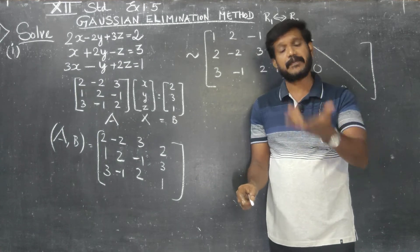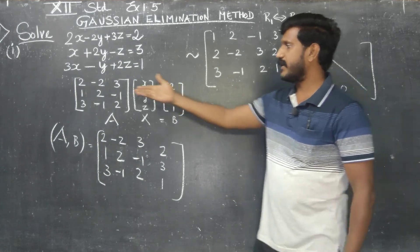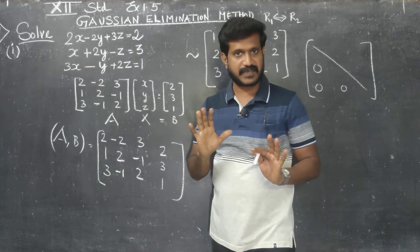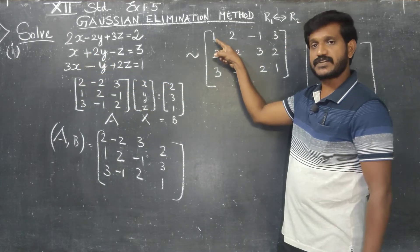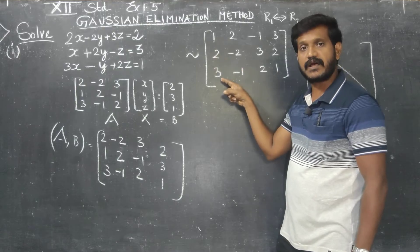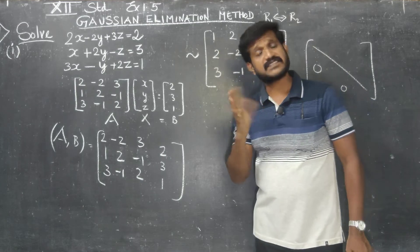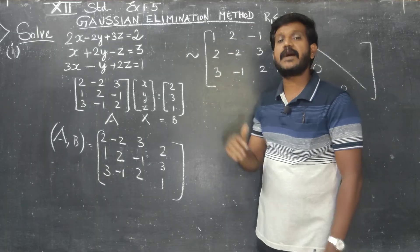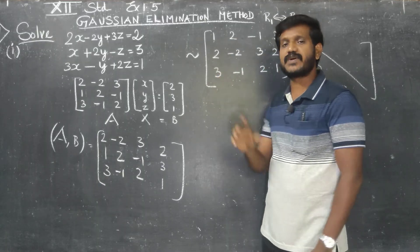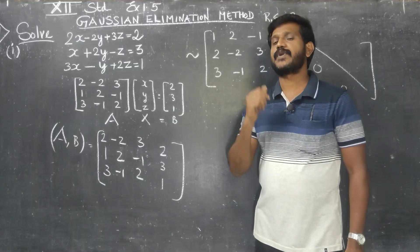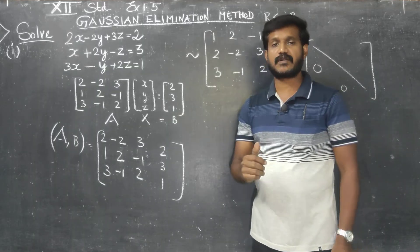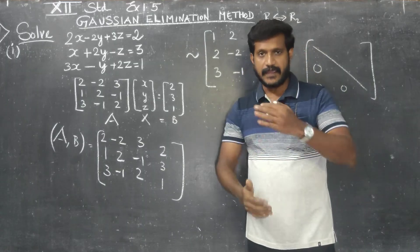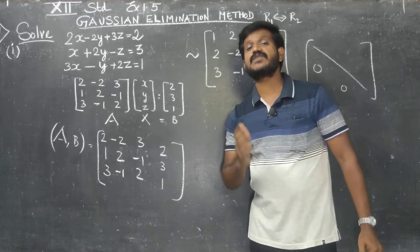After interchanging R1 and R2, the new matrix is: row 1 becomes 1, 2, minus 1, 3; row 2 becomes 2, minus 2, 3, 2; row 3 becomes 3, minus 1, 2, 1. You can see that the first element of row 1 is now 1. For the principal diagonal, all below-diagonal elements should become 0.